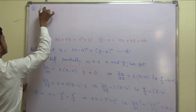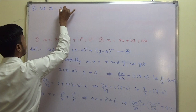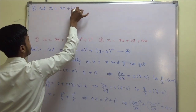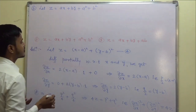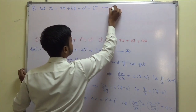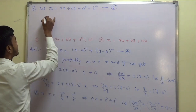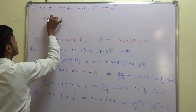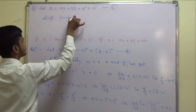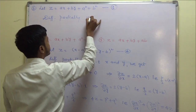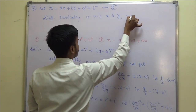Now let us solve problem 2: z equals ax plus by plus a squared plus b squared. We have to form a partial differential equation. Differentiating partially with respect to x and y, we get: